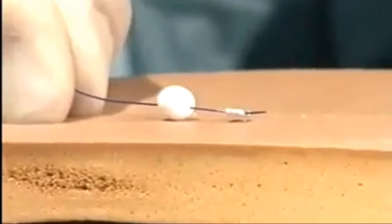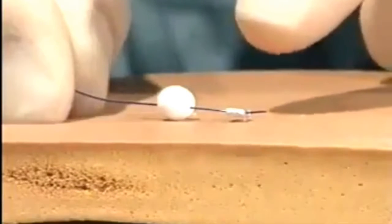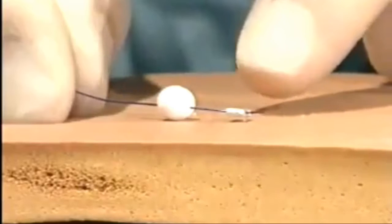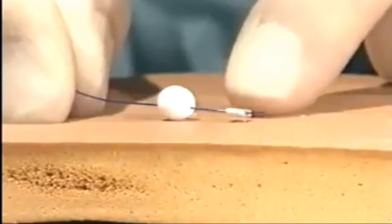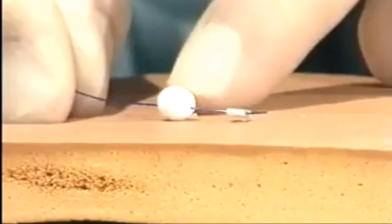For non-absorbable sutures, some surgeons like to use the collar and cuff technique. There is a crushed bead at one end, followed by a larger bead to stop the suture being pulled through the needle hole.